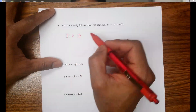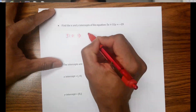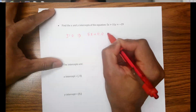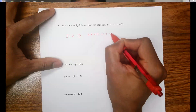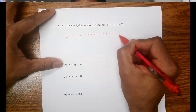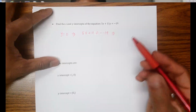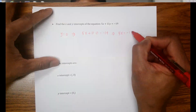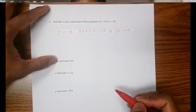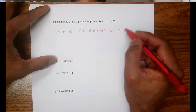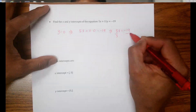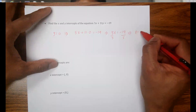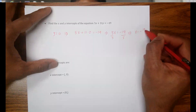Why is zero here? It gives me 5x plus 11 times 0 equal negative 19. And because 11 times 0 is 0, I will find 5x equal negative 19. And now because I'm looking for x, I need to just divide both sides by 5, and that helps me to find x equal negative 19 over 5.